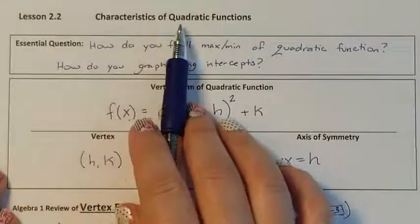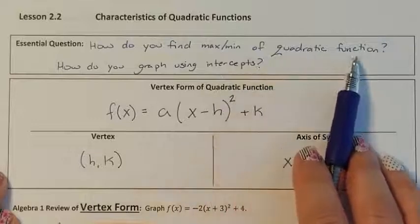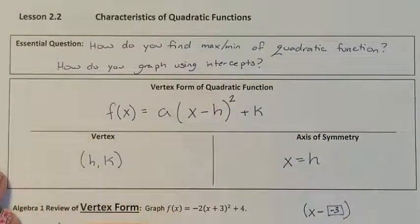Lesson 2.2, Characteristics of Quadratic Functions. How do you find the max and min of quadratic functions, and how do you graph using intercepts?